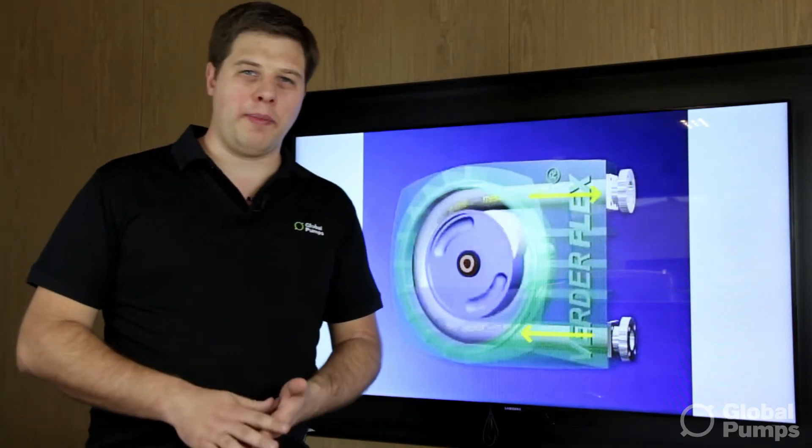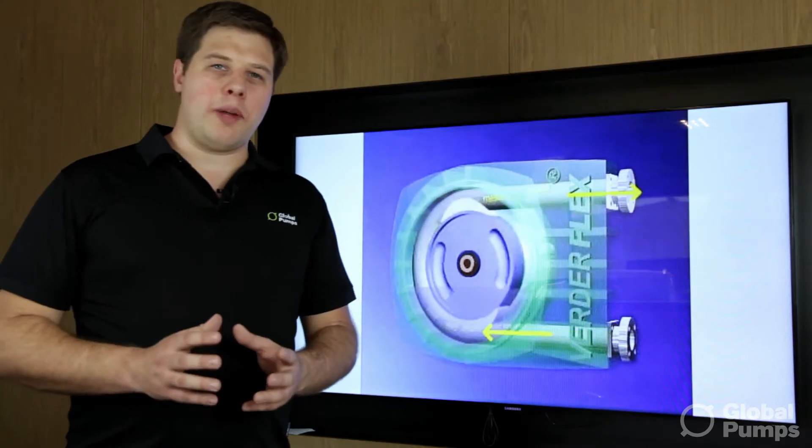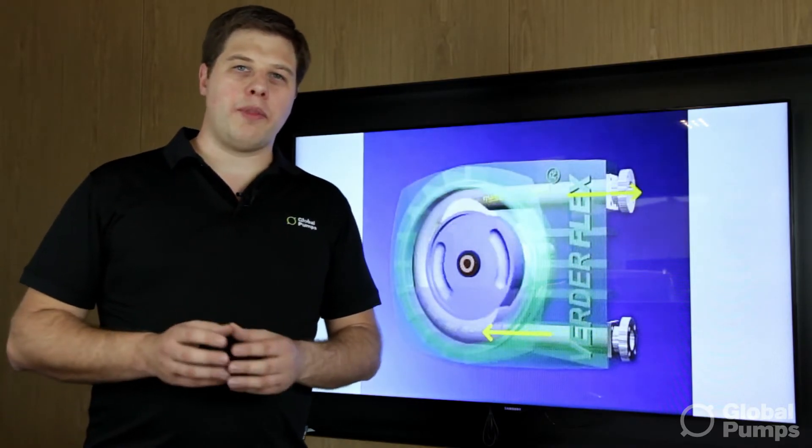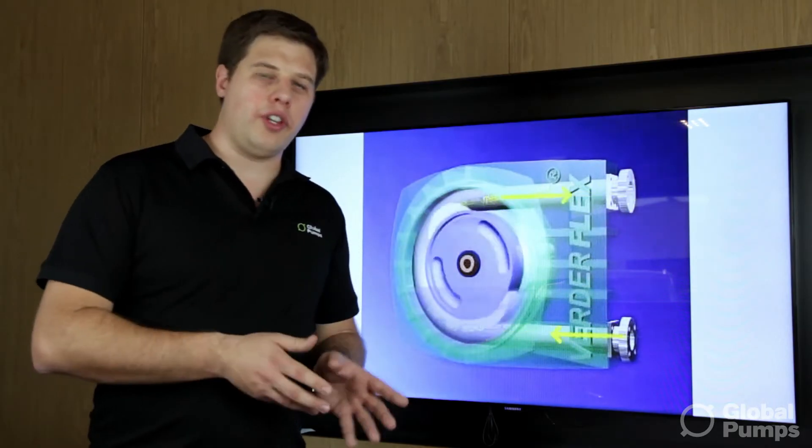A positive displacement pump is a pump that traps a fixed amount of liquid and transfers it from the suction side of the pump to the discharge.